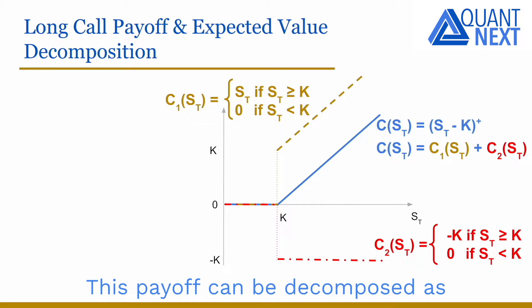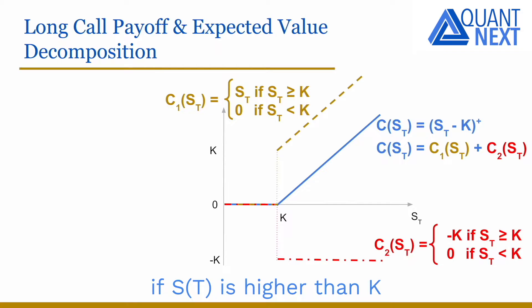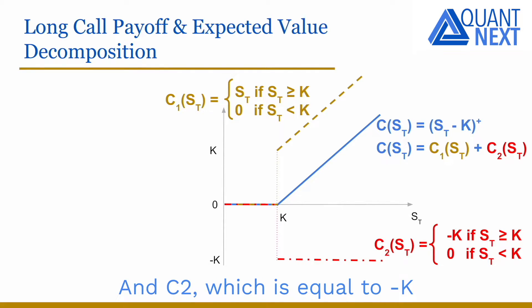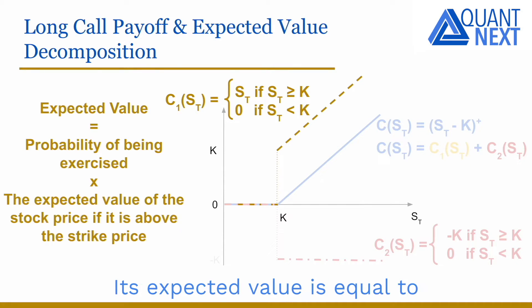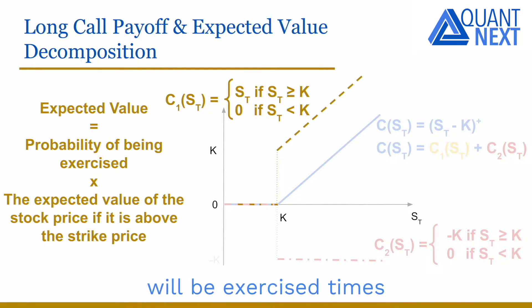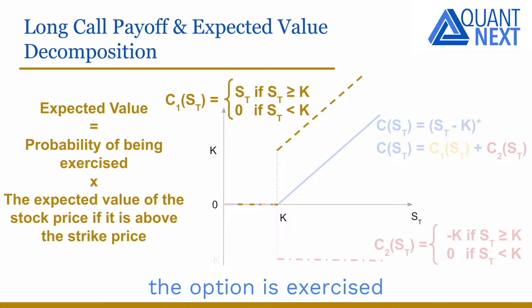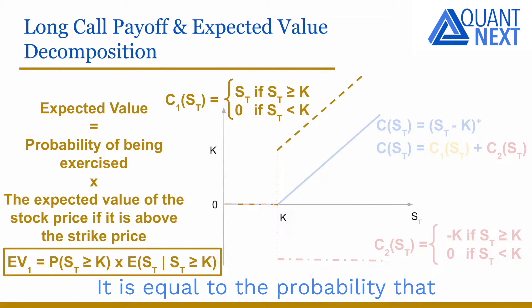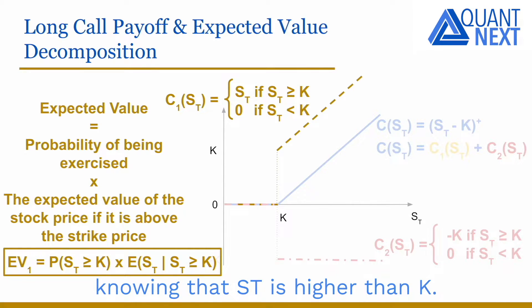This payoff can be decomposed as a sum of two different payoffs. C1, which is equal to ST if the option is exercised, i.e. if ST is higher than K, and 0 otherwise. And C2, which is equal to minus K if the option is exercised, and 0 otherwise. The expected value of C1 is equal to the probability that the option will be exercised times the expected value of the stock price conditionally on the fact that the stock is above the strike price at maturity. It is equal to the probability that ST is higher than K times the expectation of ST, knowing that ST is higher than K.